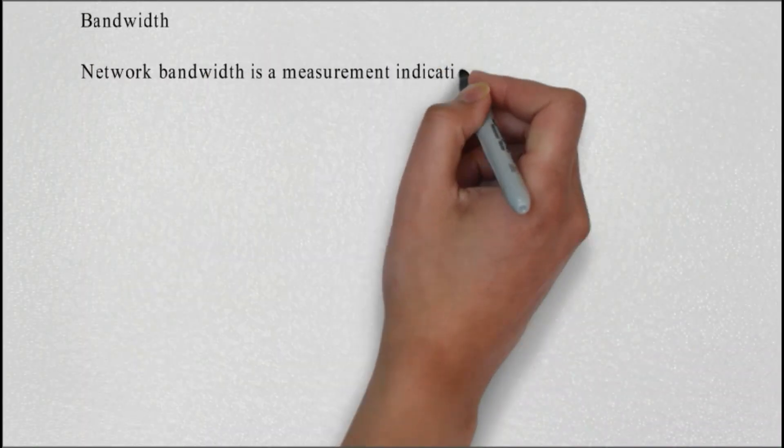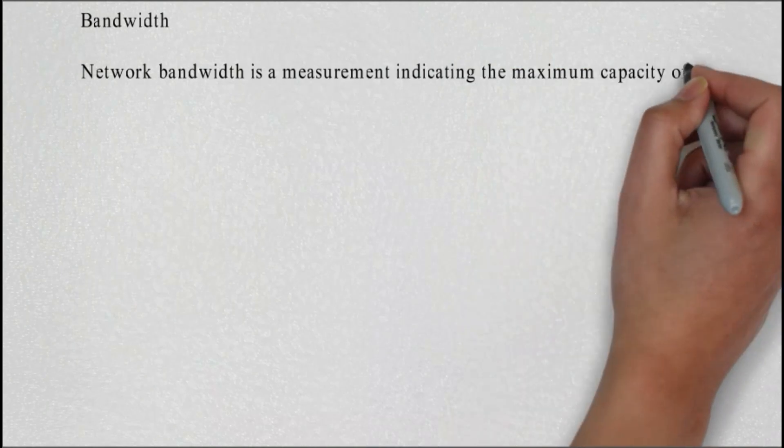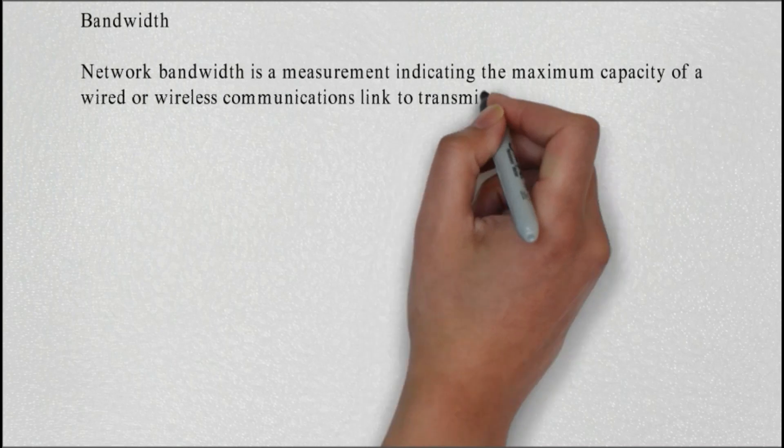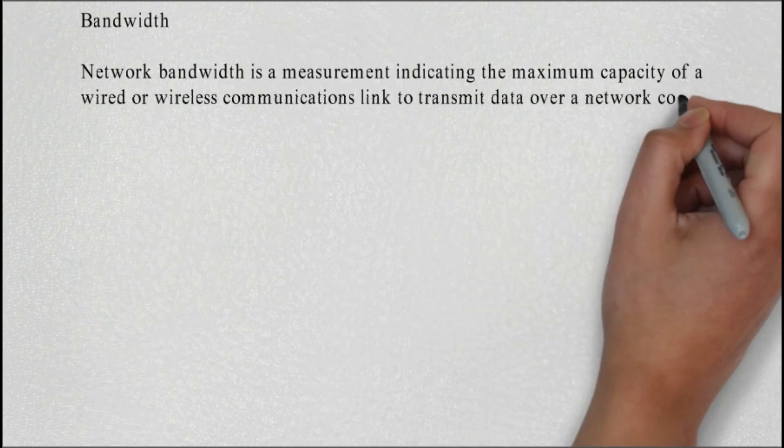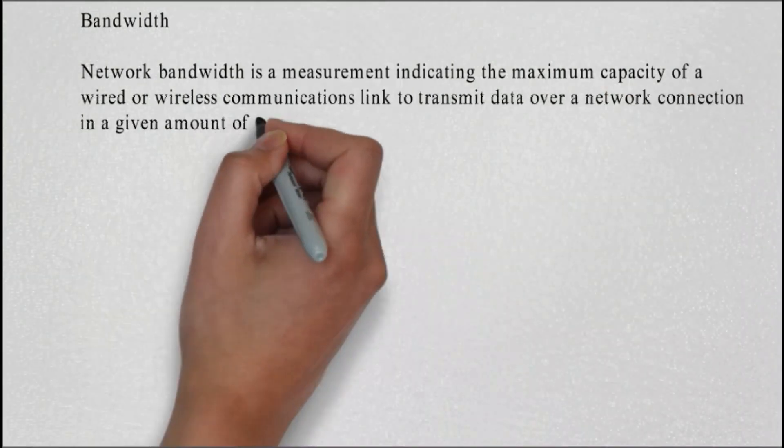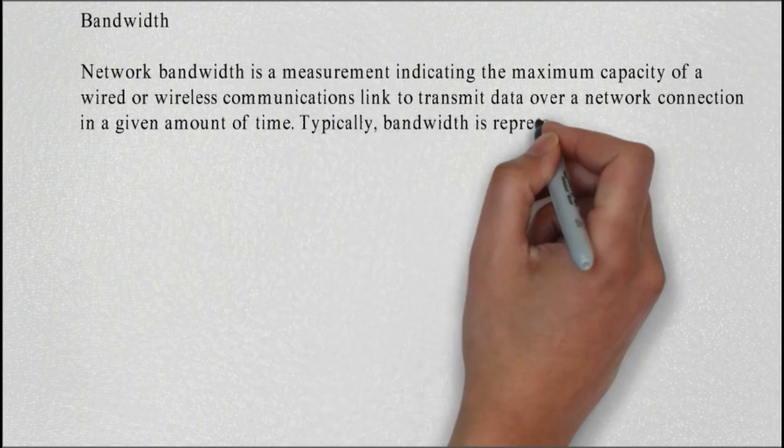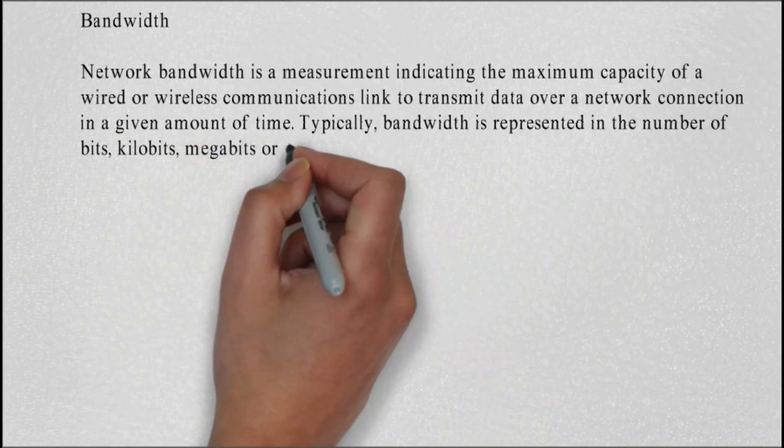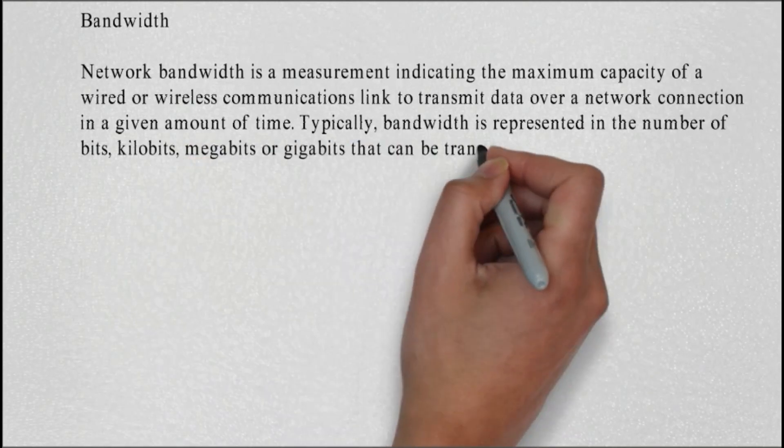Bandwidth: network bandwidth is a measurement indicating the maximum capacity of a wired or wireless communications link to transmit data over a network connection in a given amount of time. Typically, bandwidth is represented in the number of bits, kilobits, megabits, or gigabits that can be transmitted in one second.